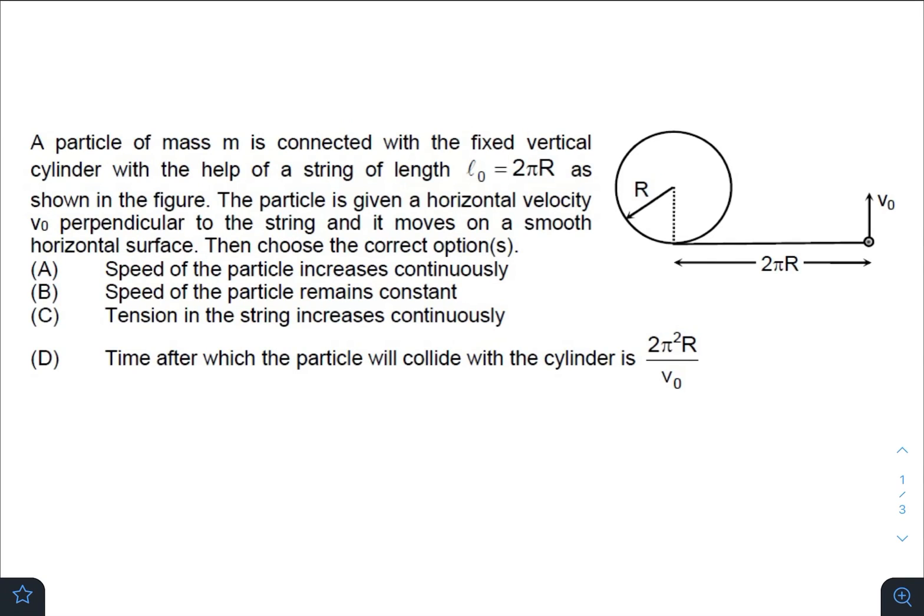Hey, what is up everyone, I hope all of you are doing great. In today's question, we have a particle of mass m connected with a fixed vertical cylinder with the help of a string of length l₀ equals 2πR. So this string is of length 2πR as shown in the figure.